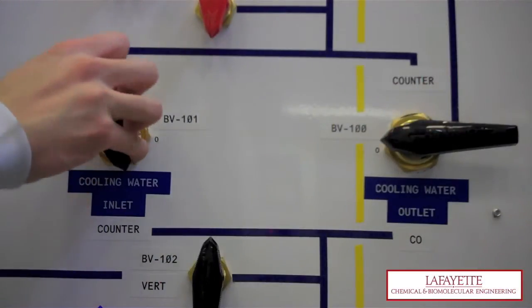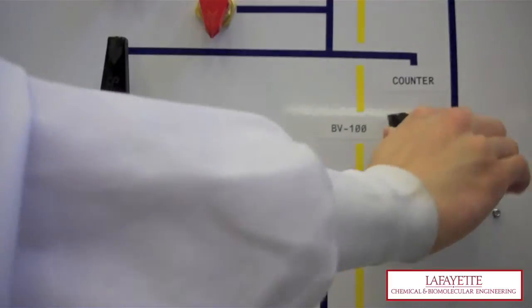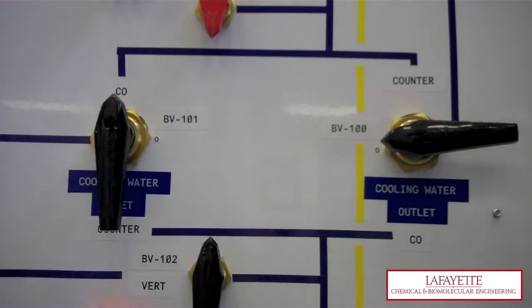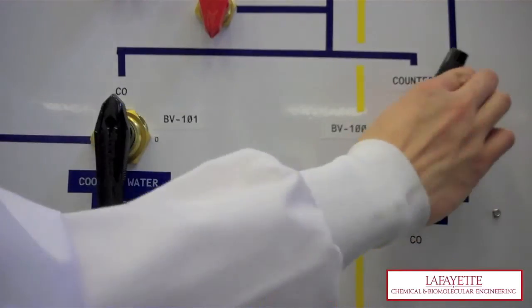On the right panel, adjust BV101 and BV100 to a counter-current or co-current flow configuration for the vertical or horizontal column condensers.